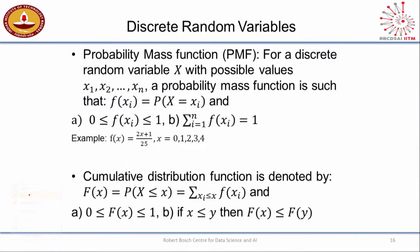So you have the random variable in uppercase, the variates in lowercase, and a probability mass function is nothing but a function where, if I substitute each value x1, x2, x3, and so on, it precisely returns to me the probability that this random variable capital X can take on that particular value. Does this make sense?